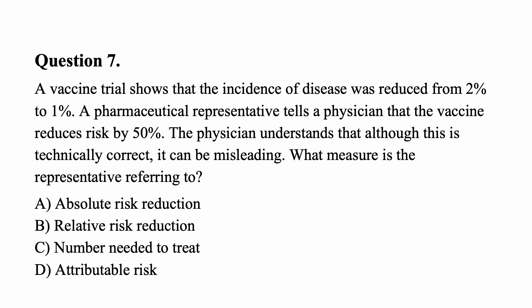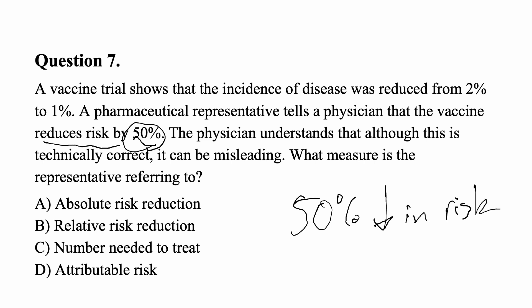Question seven: A vaccine trial shows that the incidence of a disease was reduced from 2% to 1%. A pharmaceutical representative tells the physician the vaccine reduces risk by 50%. The physician says this is technically correct but can be misleading. What measure is the representative referring to? The 50% figure represents a relative risk reduction — anytime you see that percentage reduction in risk expressed proportionally, you're thinking relative risk reduction. The answer is B.